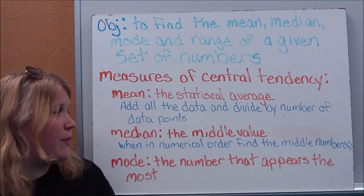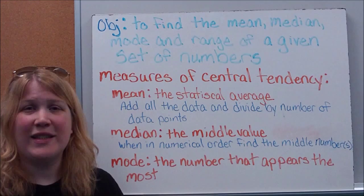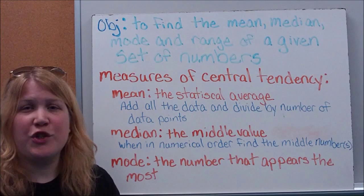The median simply refers to the middle number, and the trick for a median is you need to make sure that your numbers are in numerical order. When you're given a list of numbers, they're not always in the right order, so you need to reorder them. And then we just count towards the middle, which one falls exactly in the middle of the data.